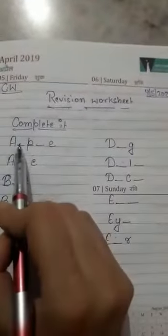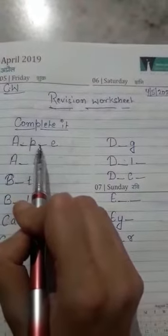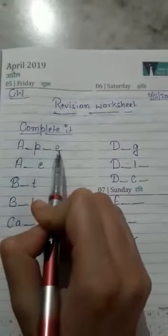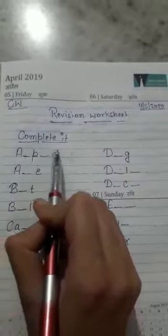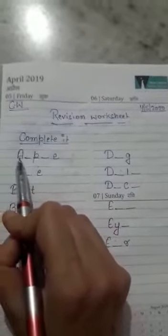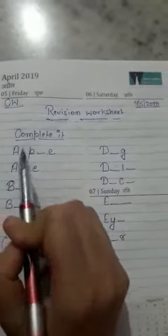What is it written? Here it is written A, and here is space and P, then again space then E. We have to fill an alphabet and complete it, and we have to make a word. What do we have to do?